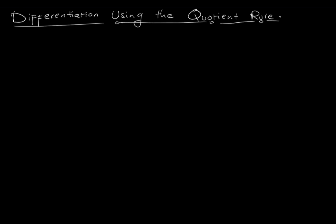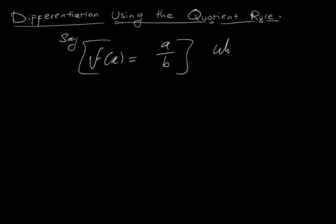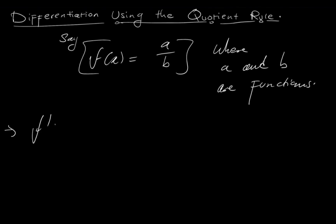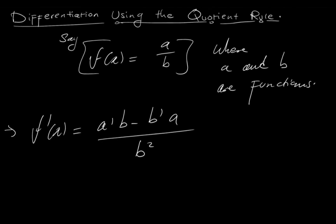Alright, let's begin. Say you have a function f of x, and f of x is equivalent to a over b, where a and b are separate functions. To find the derivative of this, we say f prime of x is equal to a prime b minus b prime a, over b squared. This is what we'll be doing to solve all the examples we'll discuss together.